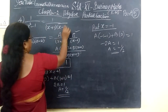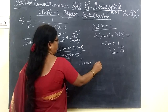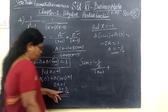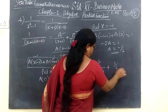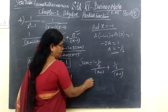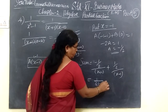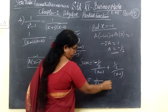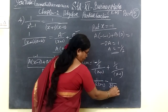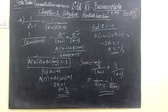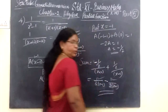Now, substituting the values back. Therefore the answer is: A value which is minus 1 by 2 over S plus 1, then B value which is 1 by 2 over S minus 1. Write it in proper form. The value of A is minus 1 by 2 and the denominator is S plus 1, and 1 by 2 over S minus 1. So this is the answer for the fourth question.